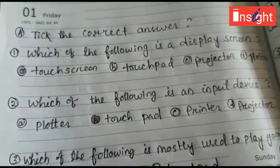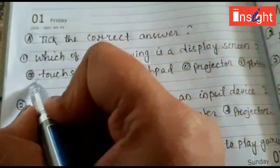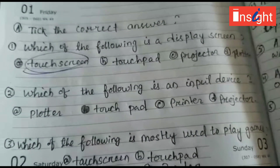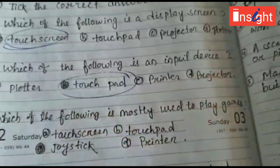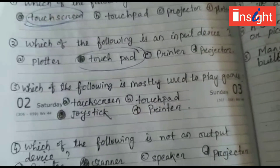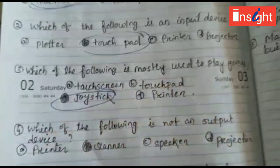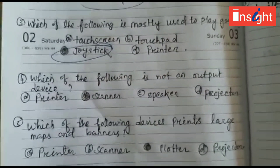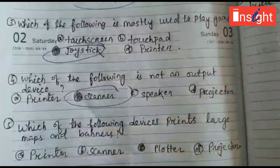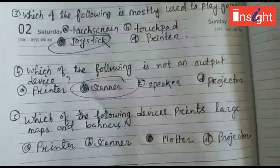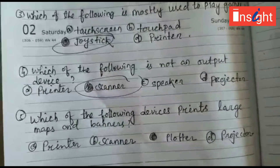Question 1: Which of the following is a display screen? Answer: touch screen. Question 2: Which of the following is an input device? Answer: touchpad. Question 3: Which of the following is mostly used to play games? Answer: joystick. Question 4: Which of the following is not an output device? Answer: scanner, because scanner is an input device. Question 5: Which of the following devices prints large maps and banners? Answer: plotter.